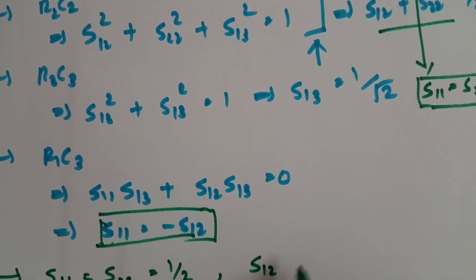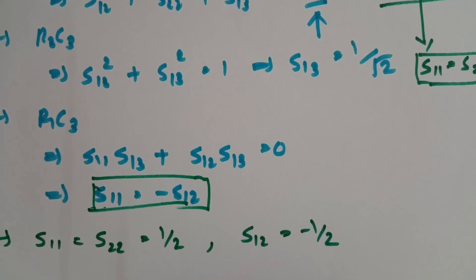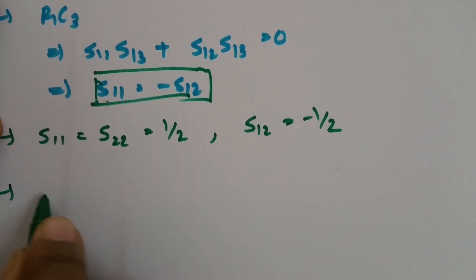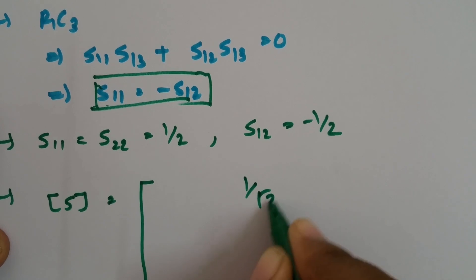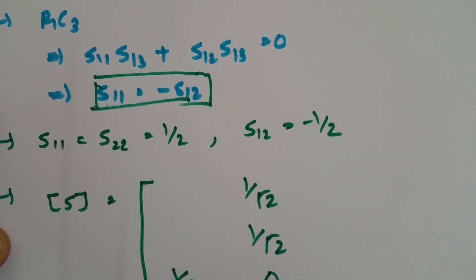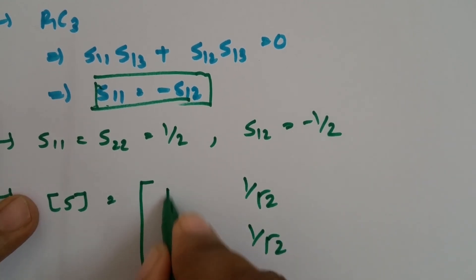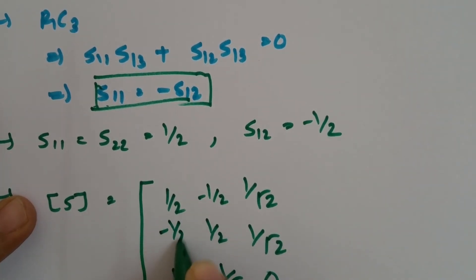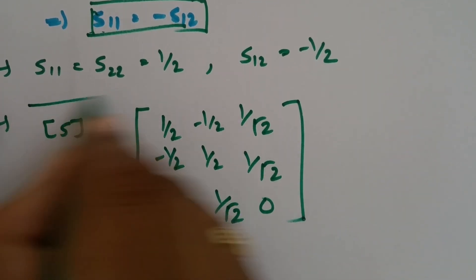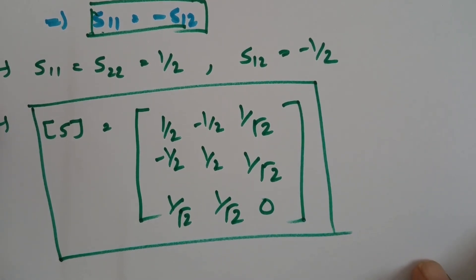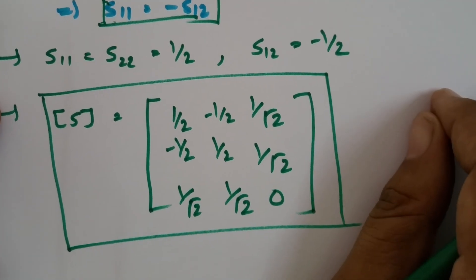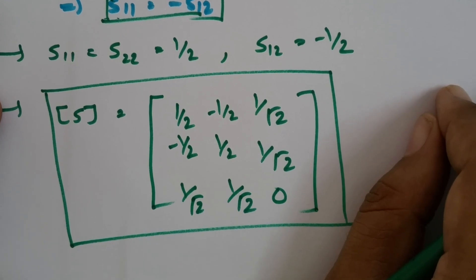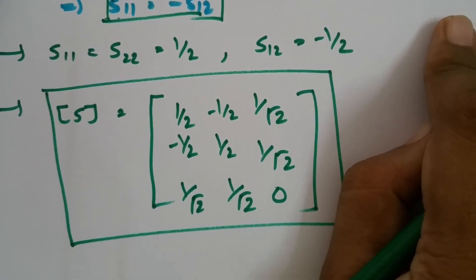Using S11 = S22 and S11 = −S12, we can solve to get S11 = S22 = 1/2 and S12 = −1/2. Placing all these calculated values, the scattering matrix for H-plane T becomes: [1/2, −1/2, 1/√2; −1/2, 1/2, 1/√2; 1/√2, 1/√2, 0]. This scattering matrix is useful for applications where we give input at port 3 and divide it equally to port 1 and port 2.